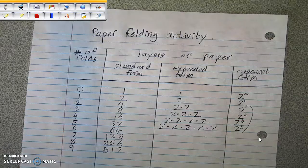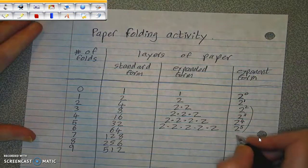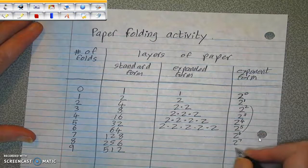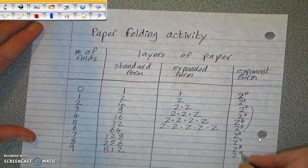We can also fill out our table all the way up to the ninth fold. 2 to the 6, 2 to the 7, 2 to the 8, 2 to the 9.